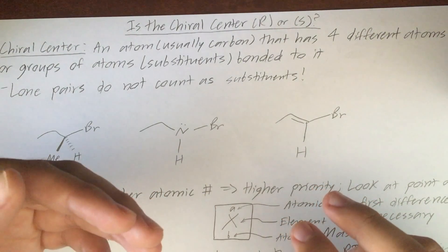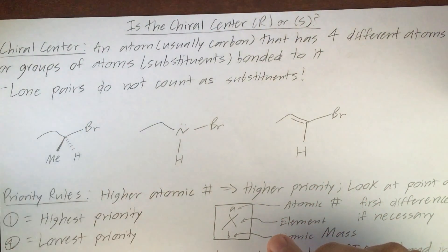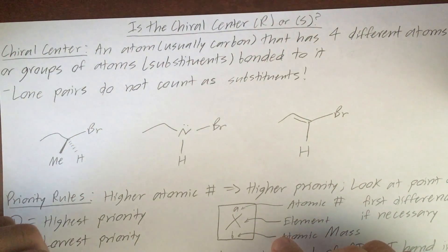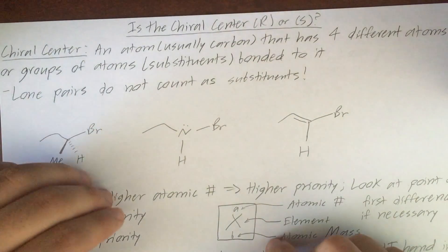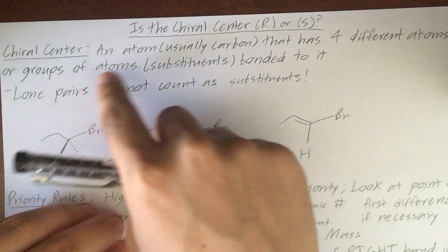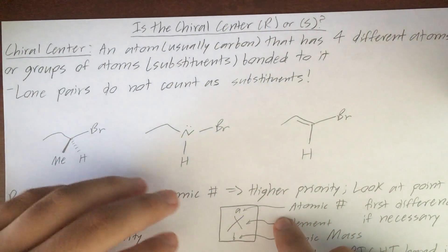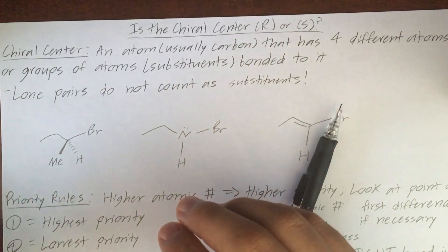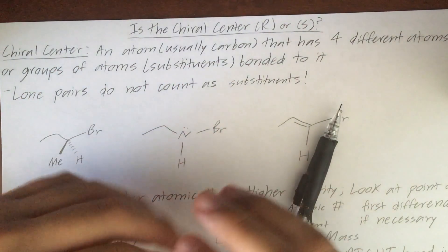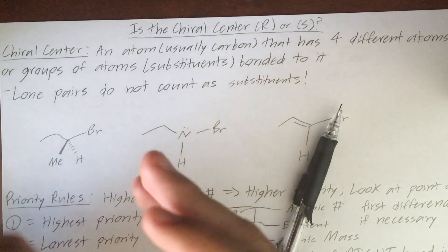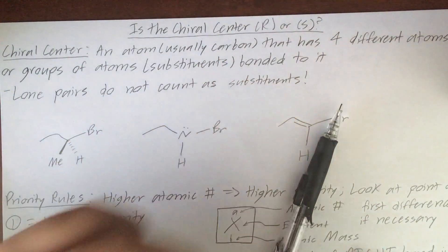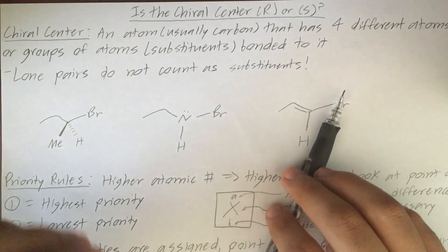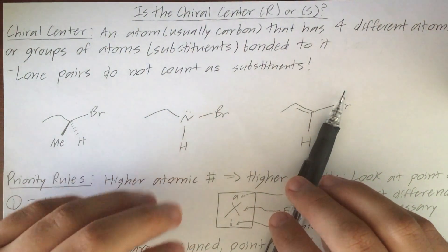In this video, we're going to be talking about assigning R and S configuration to chiral centers. But before we get to that, I just wanted to briefly outline what a chiral center is. A chiral center is defined as an atom — in most cases, it's going to be a carbon atom — that has four different substituents bonded to it. A substituent is an atom or a group of atoms. Note that a lone pair does not count as a substituent.